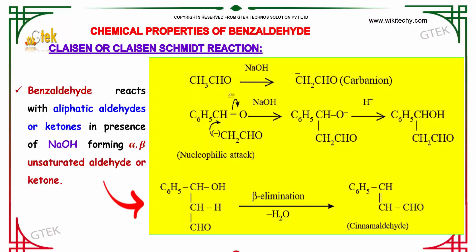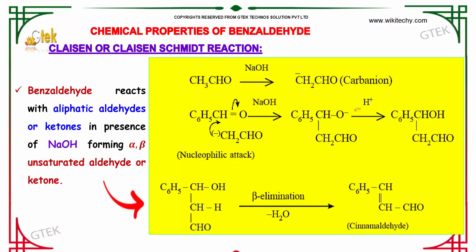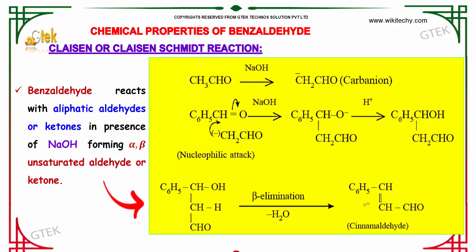When CH3CHO (acetaldehyde) reacts with sodium hydroxide, it forms a carbanion. Upon this carbanion, a nucleophilic attack occurs to form C6H5CHOH-CH2CHO. Further, when this compound undergoes beta elimination, we obtain cinnamaldehyde.